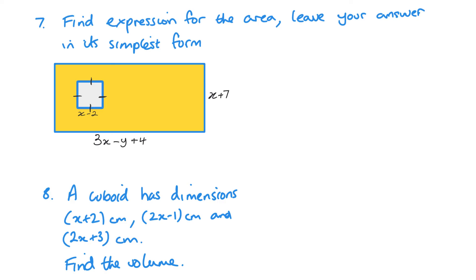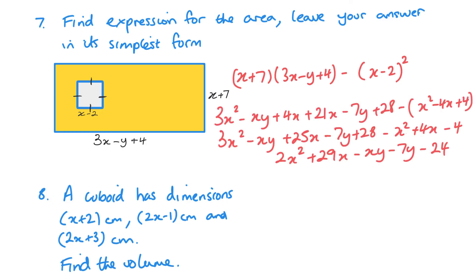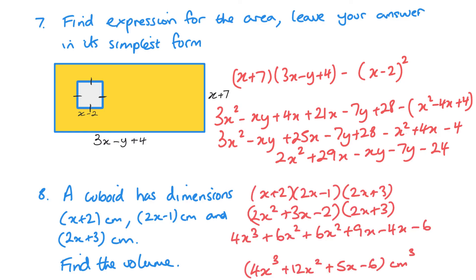To find the shaded area, we need the area of the rectangle minus the area of the square — set that up first. Area of the rectangle is length times width, then subtract the area of the square. Expand everything and simplify — I'll skip ahead. Here's the answer to number 7. Number 8 is volume, so multiply all three brackets together — skipping to the end — and there's the final answer.